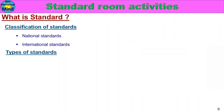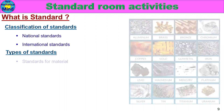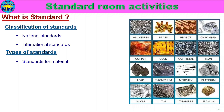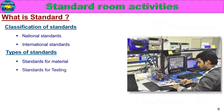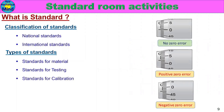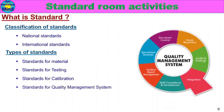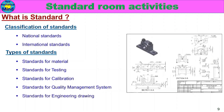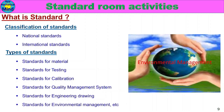Types of Standards. Standards for Materials — criteria for materials used. Standards for Testing — how to do a test, criteria and specifications. Standards for Calibration — how to calibrate and align. Standards for Quality Management — such as ISO standards for quality management systems.